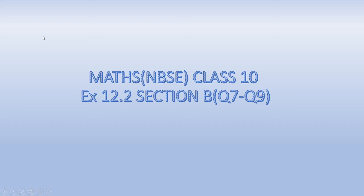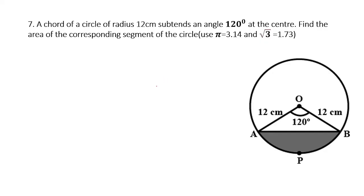Good evening class, welcome back. We shall continue with the remaining questions. Look at this question: a quarter of a circle of radius 12 cm subtends an angle of 120 degrees at the center. Find the area of the corresponding segment of the circle. Use pi as 3.14 and root 3 as 1.73.